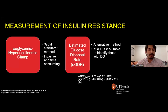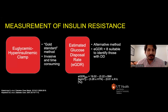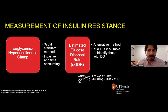To measure insulin resistance, tools include the euglycemic hyperinsulinemic clamp — the gold standard method for measuring insulin sensitivity in vivo — but its invasive and time-consuming nature makes it unsuitable for general clinical practice. A clinical-friendly alternative is the estimated glucose disposal rate (eGDR), which estimates insulin resistance using the patient's BMI, hypertension, and current A1C. In studies, an eGDR value of less than 8 is suitable to identify those at risk of having double diabetes.